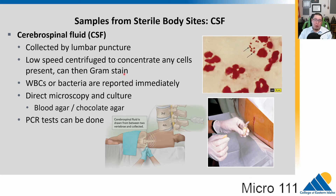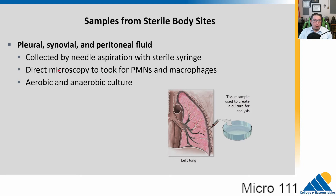Cerebrospinal fluid — discussed a lot with meningitis — is collected by a lumbar puncture, or spinal tap. You can centrifuge this material to collect any cells and do a gram stain. If white blood cells or bacteria are found, that's very serious — that is a meningitis infection — detectable rapidly through microscopy and culture. If you suspect a certain type of bacteria, PCR tests can rapidly be done. Pleural, synovial, and peritoneal fluids are all collected through needle aspiration; if PMNs or macrophages are found, that indicates infection, and both aerobic and anaerobic culture is needed.